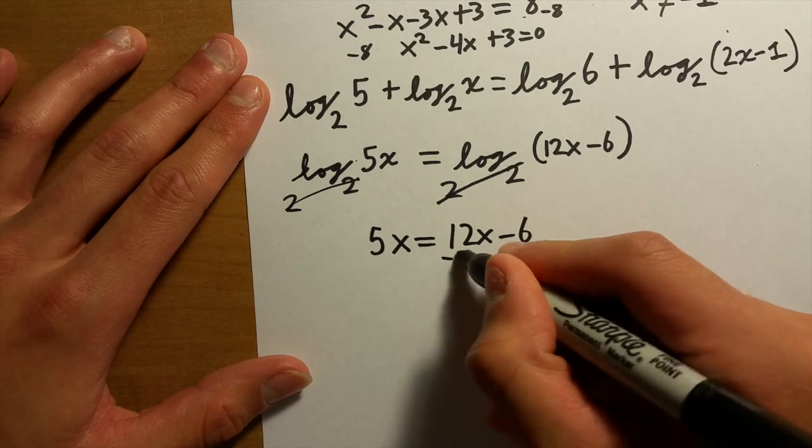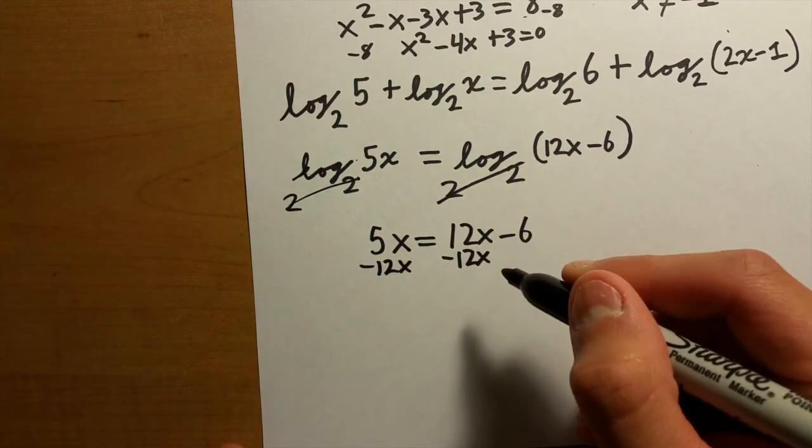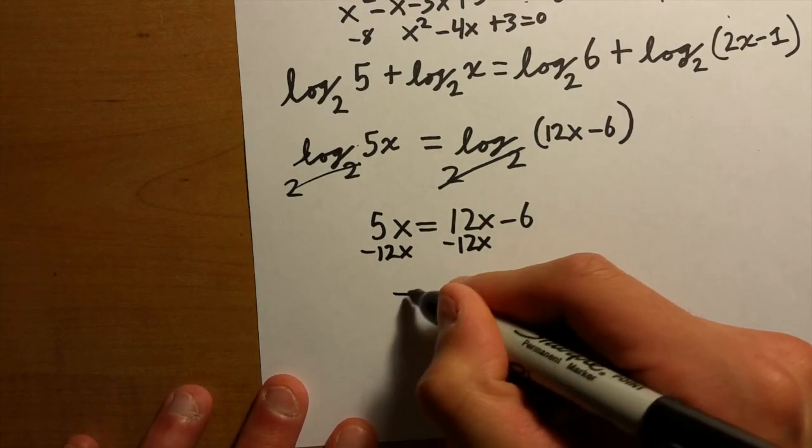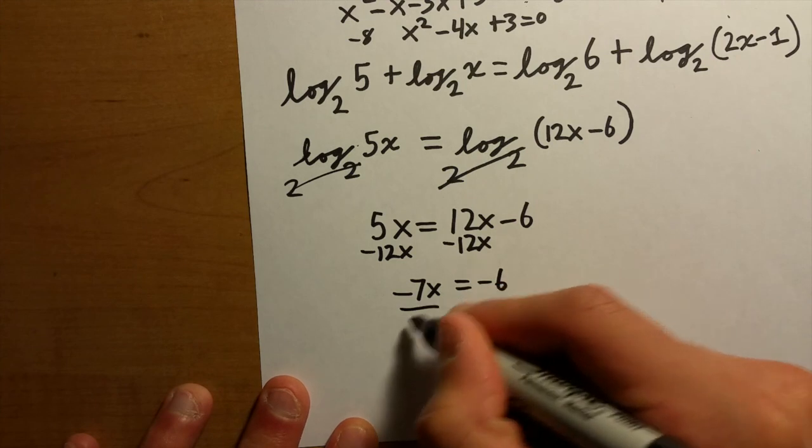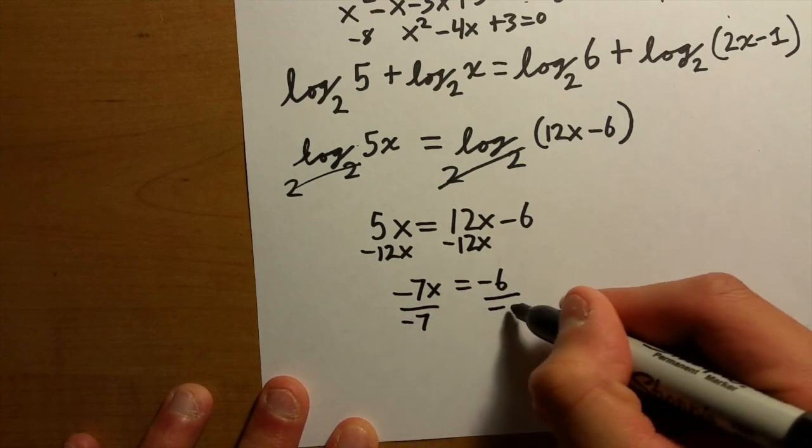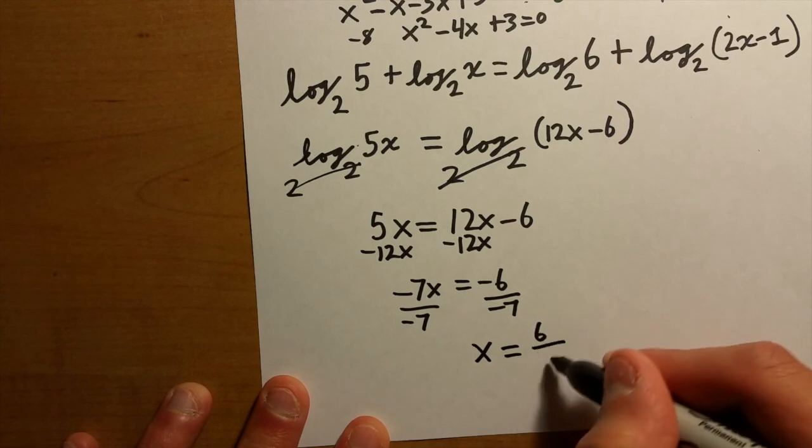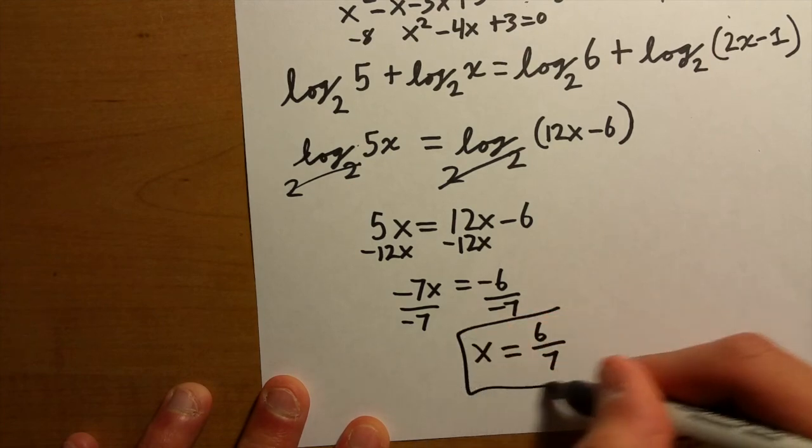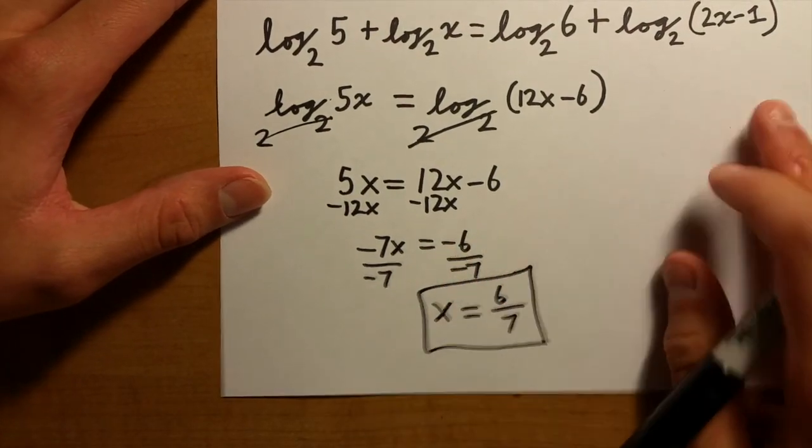If you get all your x's on one side, you're going to be left with -7x = -6. Divide both sides by -7, and then your answer will be positive 6/7.